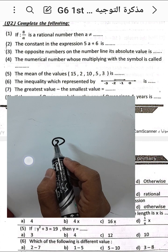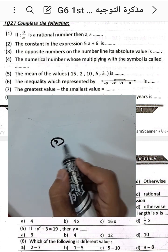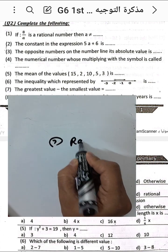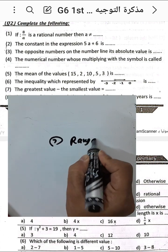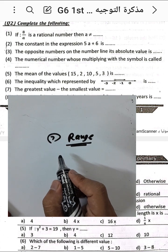Question number seven: the greatest value minus the smallest value is called the range. The range is the difference between the greatest number and the smallest number from all values.